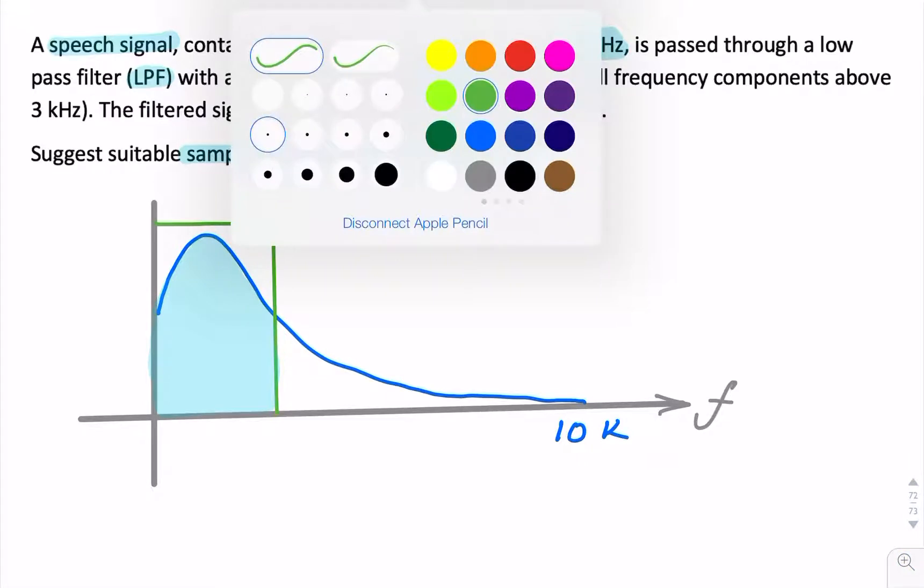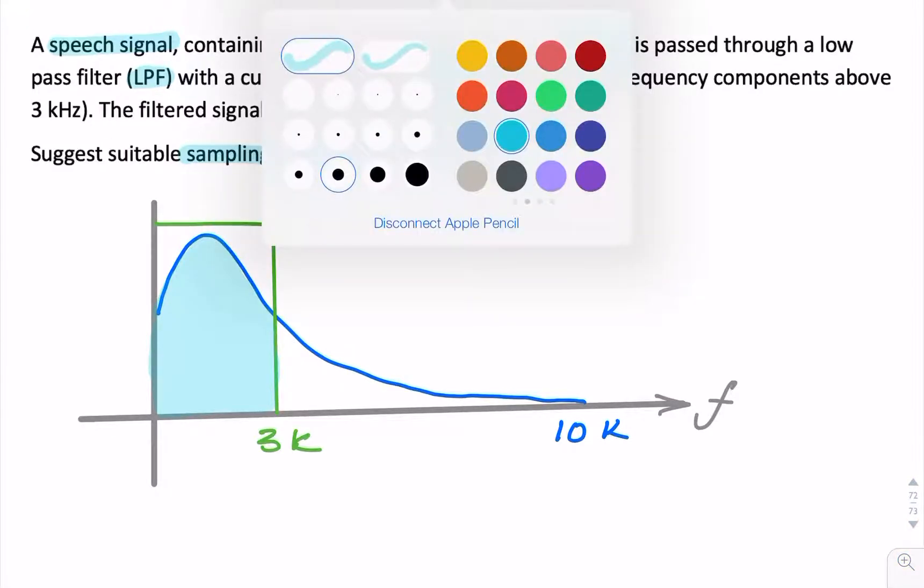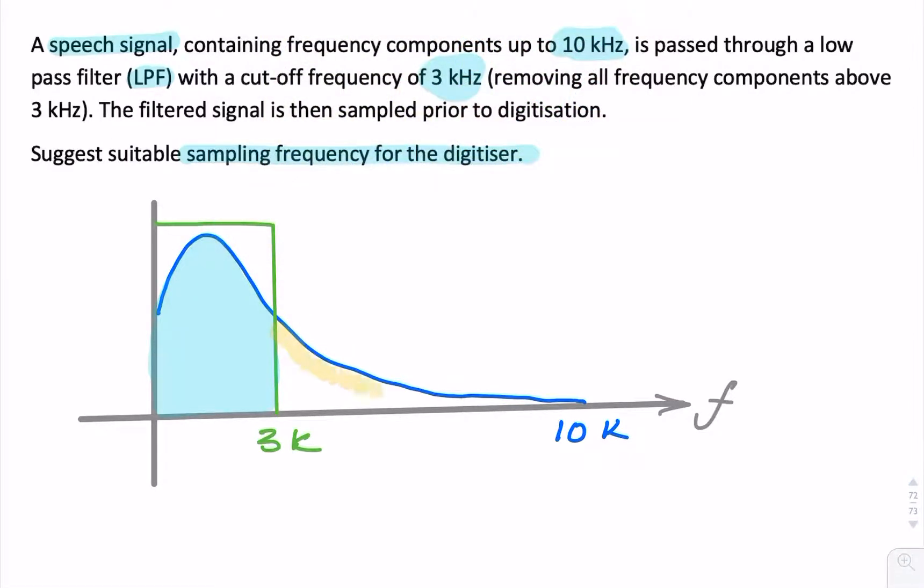This is what actually goes forward to the digitizer. So this is our 3 kHz. But everything above that, so everything in yellow here, this is all removed by the filter.